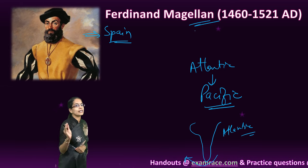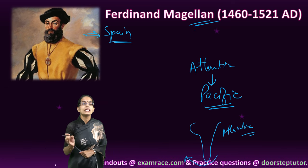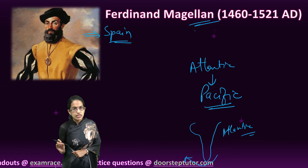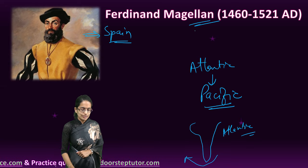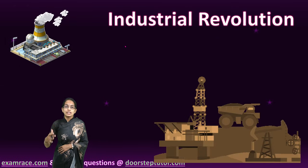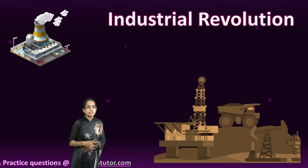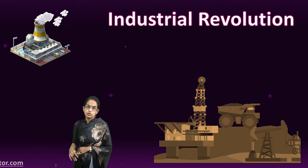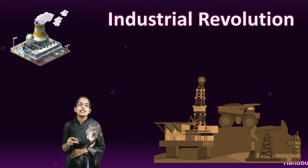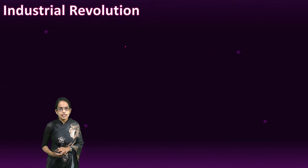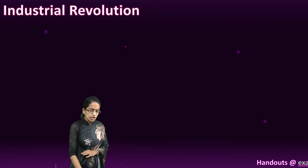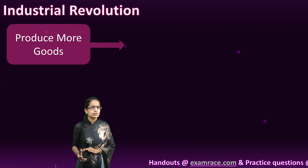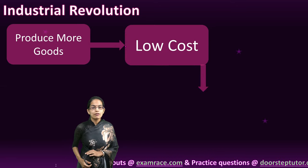Three important developments: the period of Renaissance, the period of Reformation, and the voyages for discovering new lands. Along with the age of Renaissance, Reformation, and voyages, there was another important development — a major transition in Europe — and that was the Industrial Revolution. The sole idea was to produce more and more goods at very low cost, so that profits could be even higher.